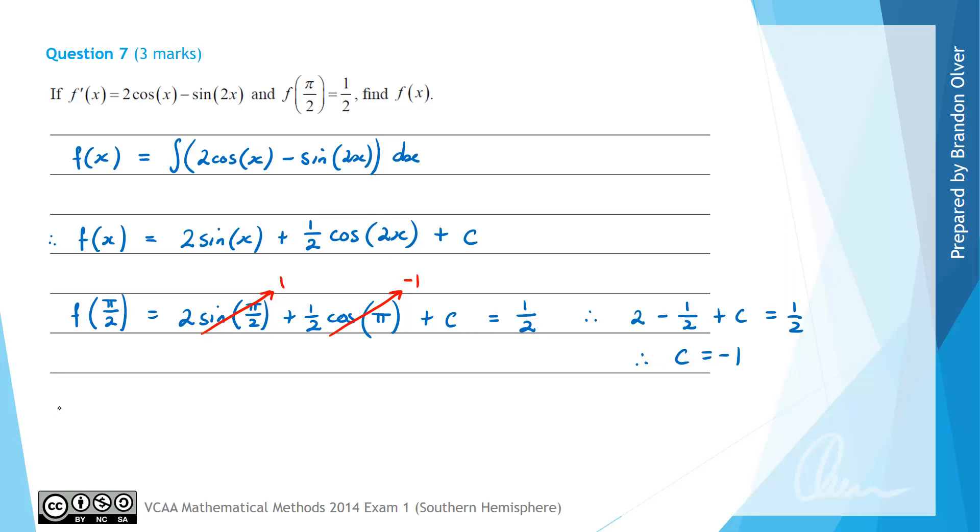Now that we know c equals -1 we can write a rule for f(x) which is going to equal 2sin(x) + 1/2 cos(2x) - 1. So that is the answer to this question.